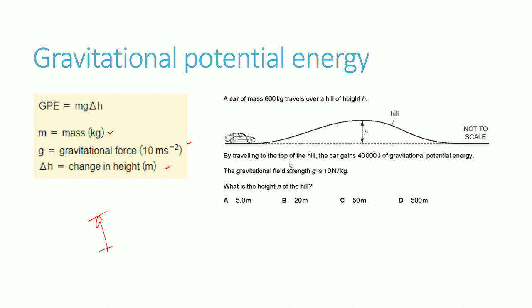A car of mass 800 kg travels over a height H. Travelling to the top of the hill, the car gains 40,000 joules of gravitational potential energy. The gravitational field strength is 10 N per kg. What is the height of the hill? We know it gains 40,000 joules of GPE, the mass is 800 kg, and gravity is 10 — we just don't know the height.